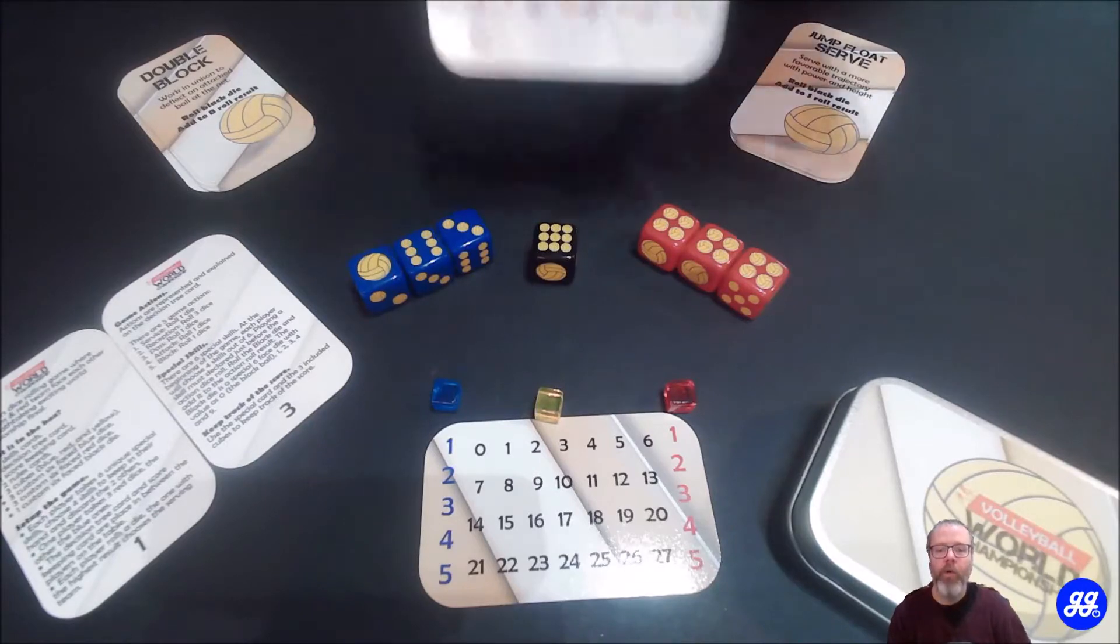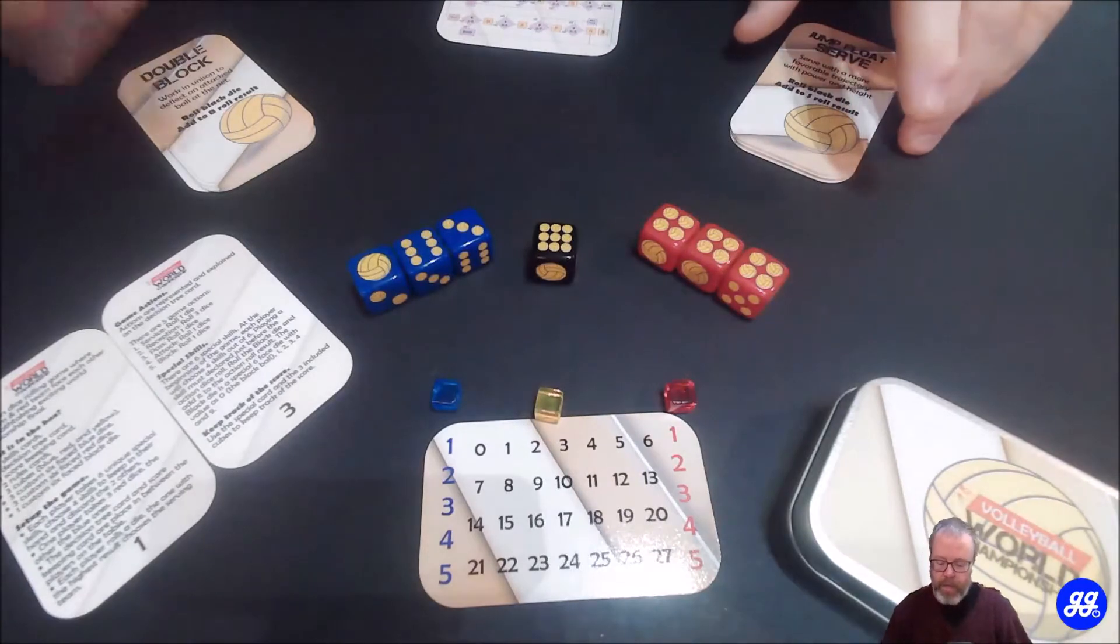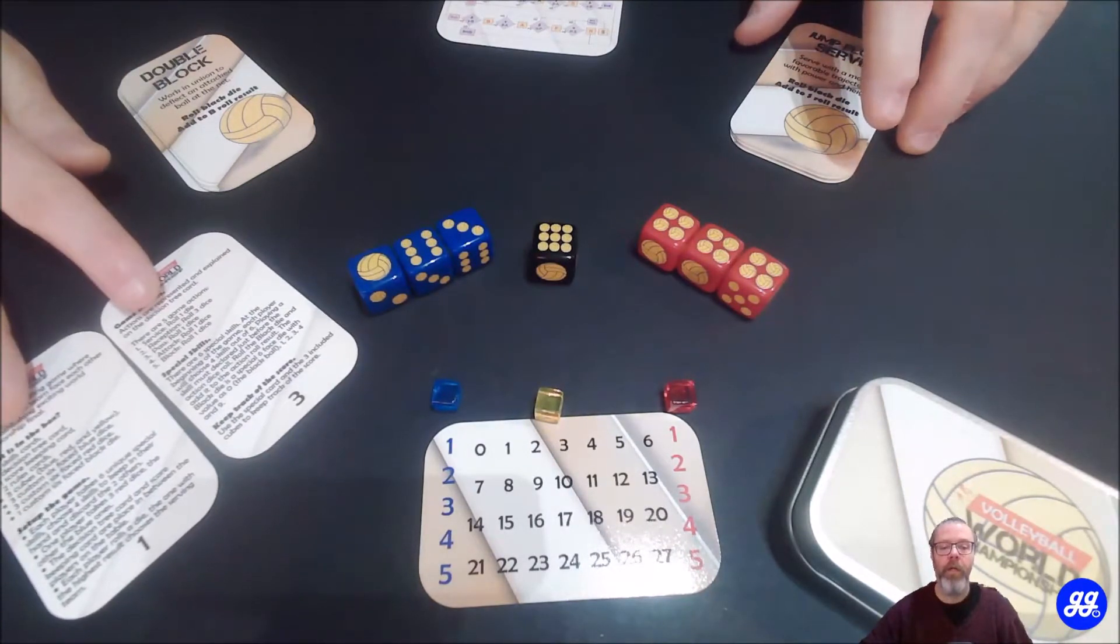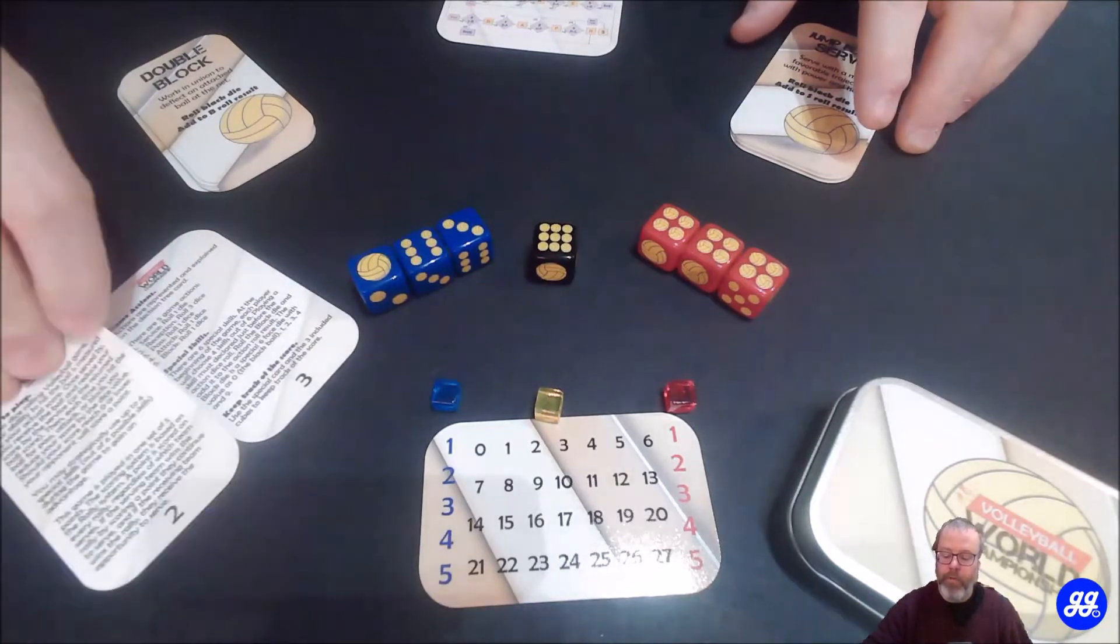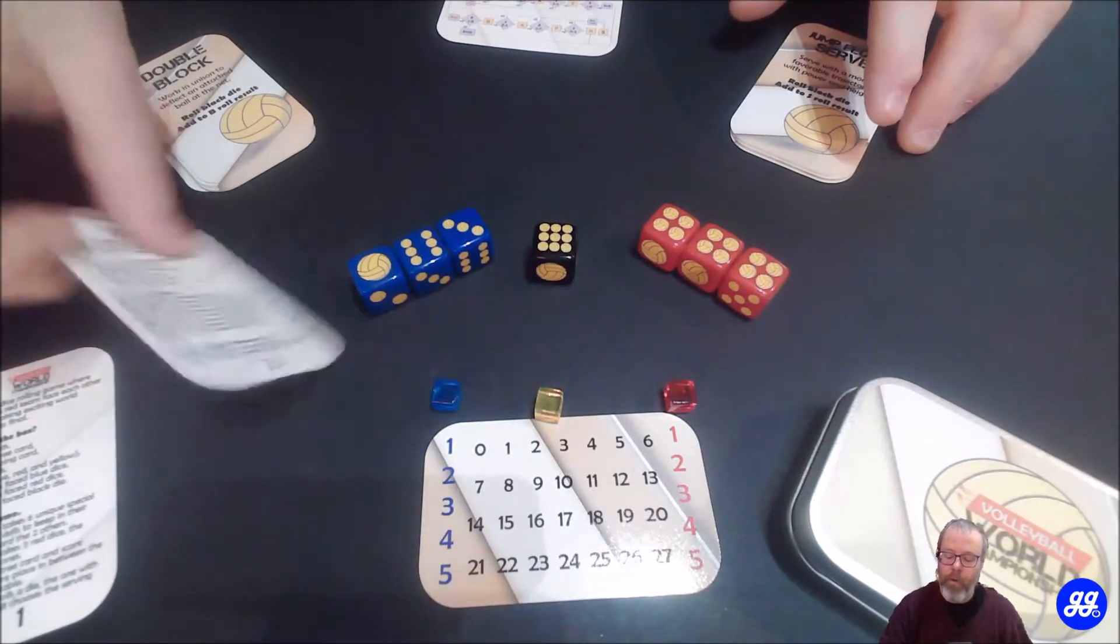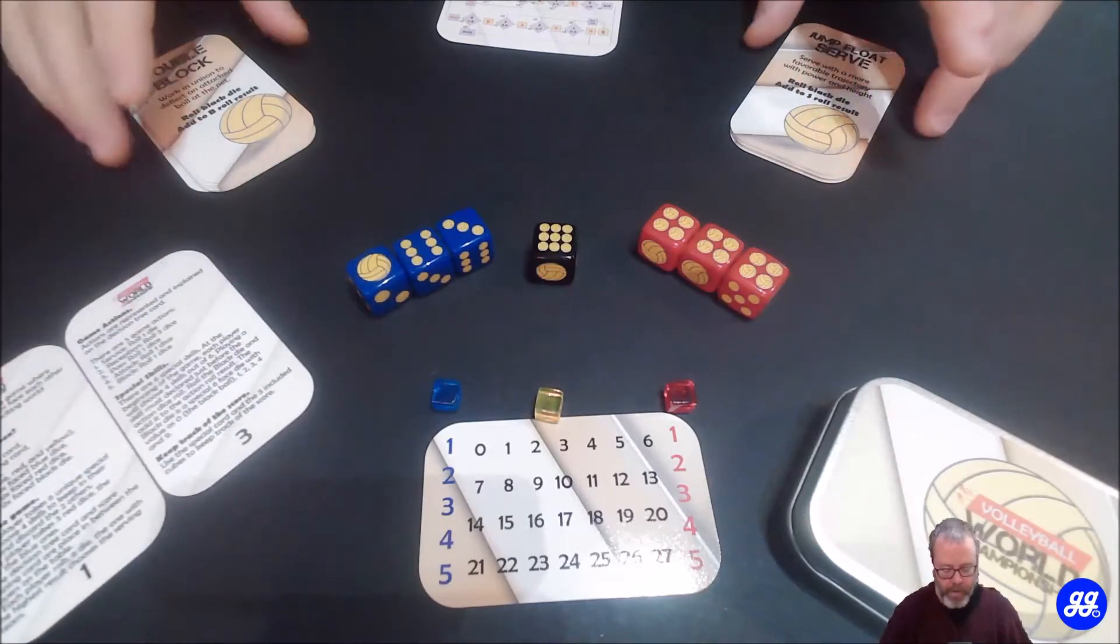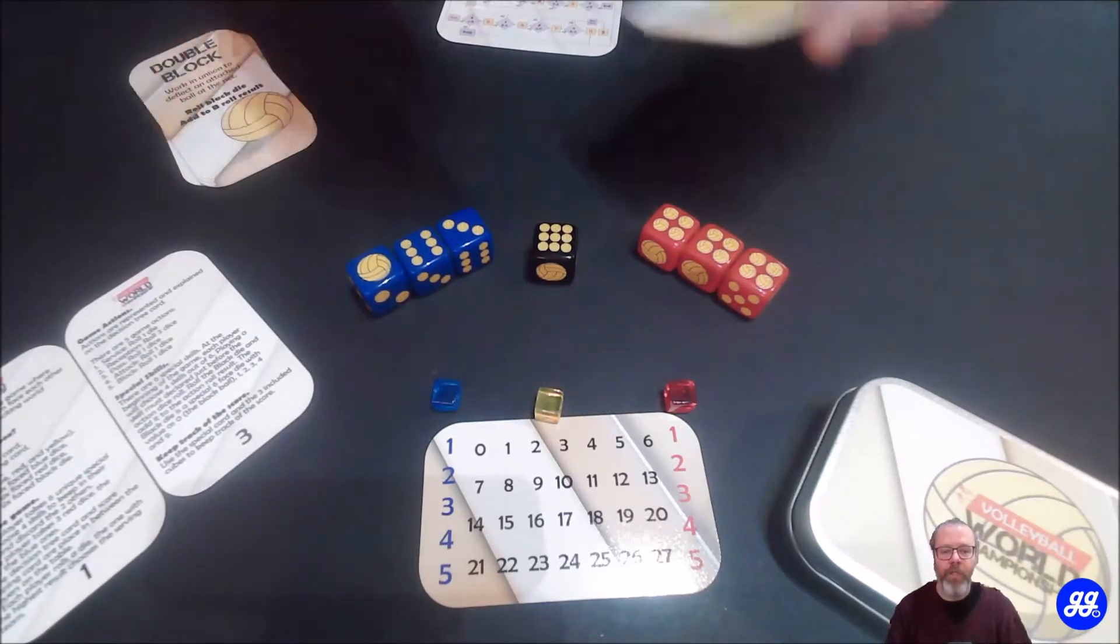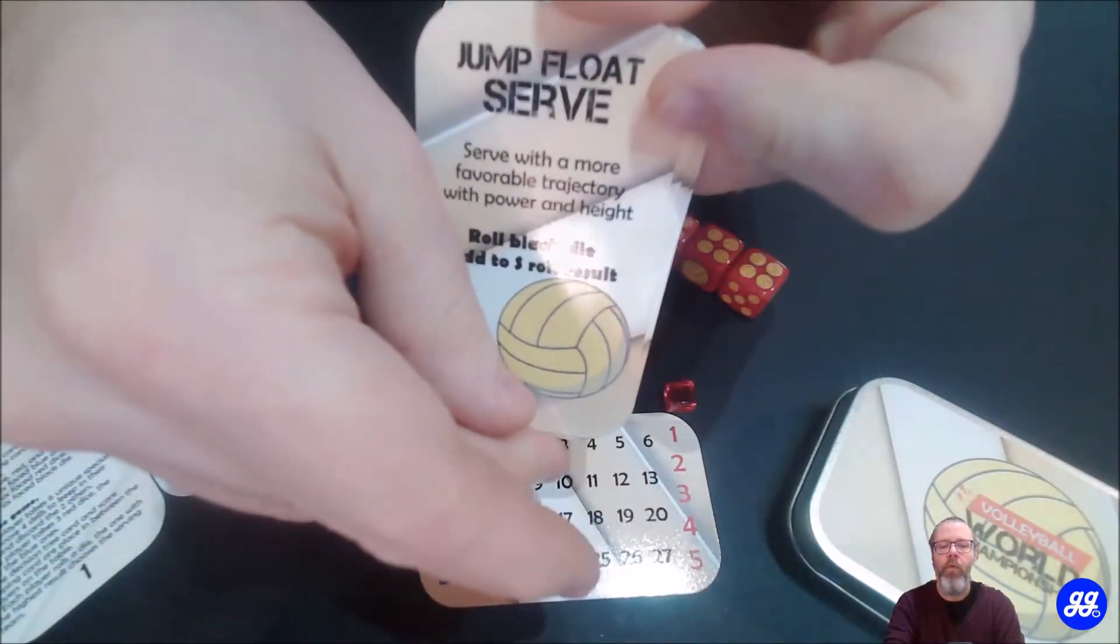One quick reference card to see how to play, two cards for the rules. So it's pretty easy rules. It's four pages, but the last one is only credits and things like that. And 12 special skills cards, one set for each player.